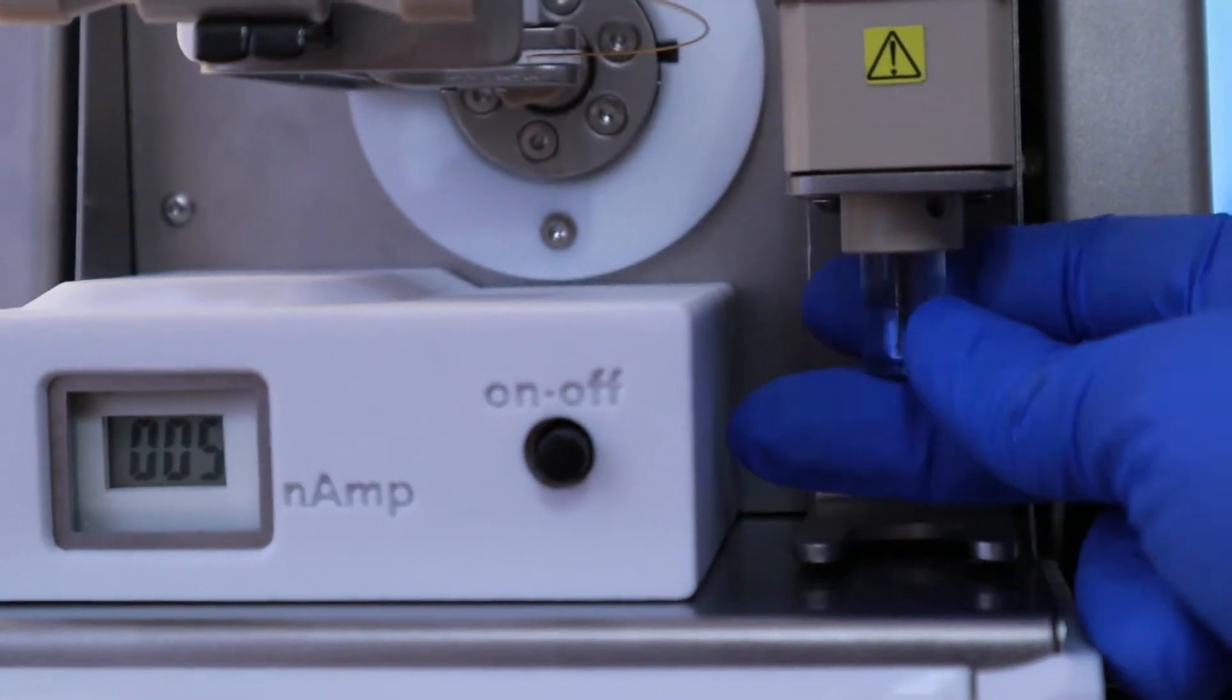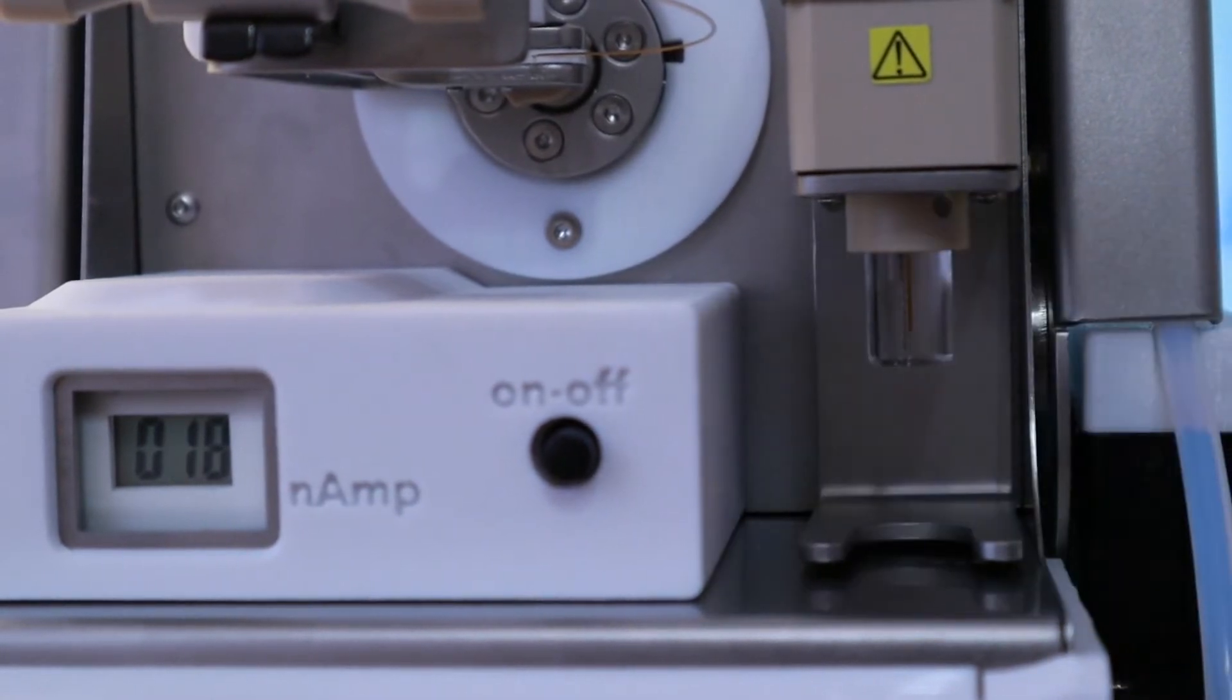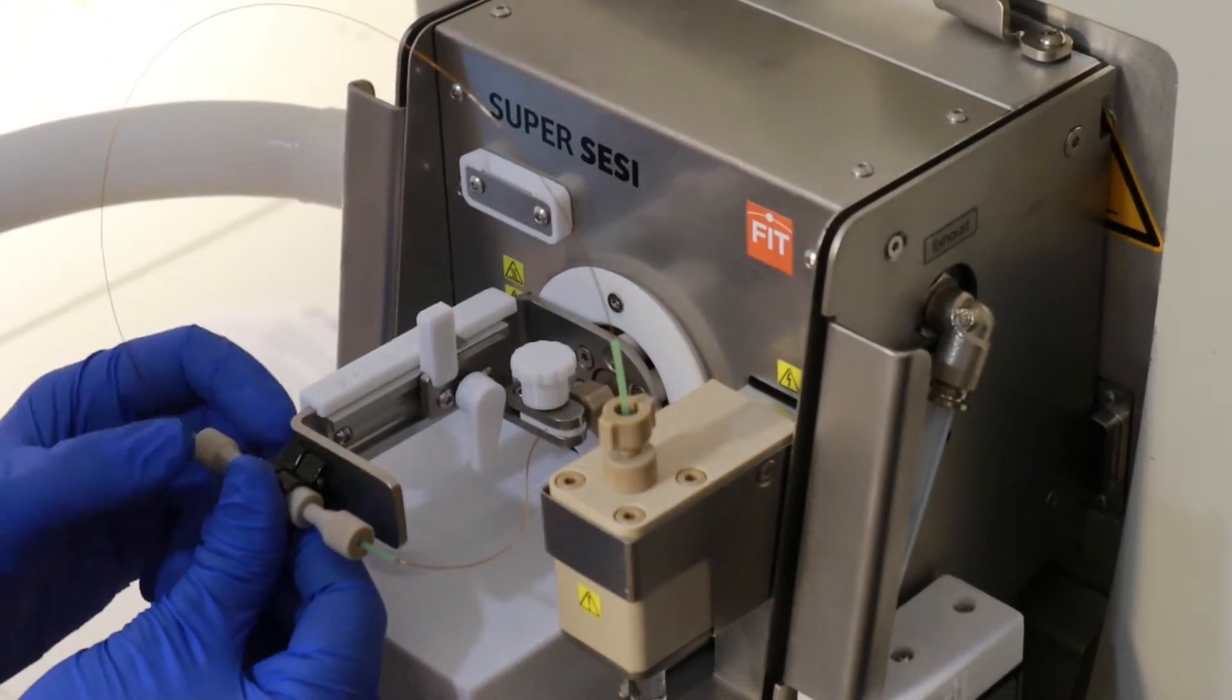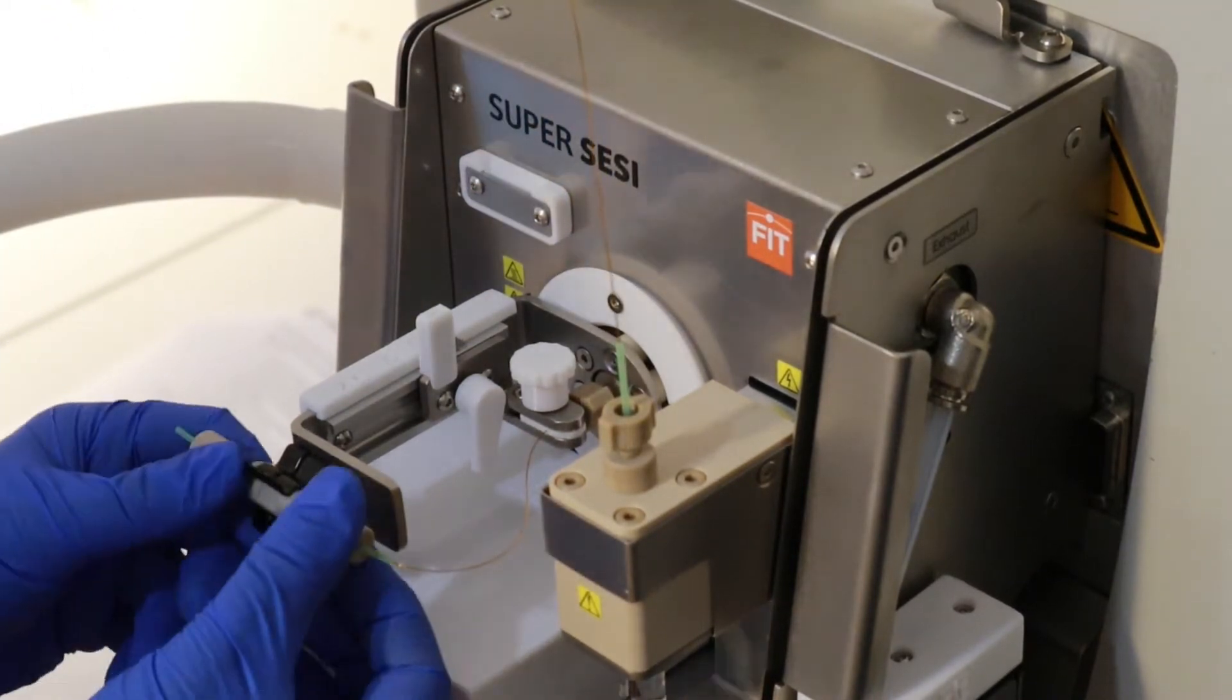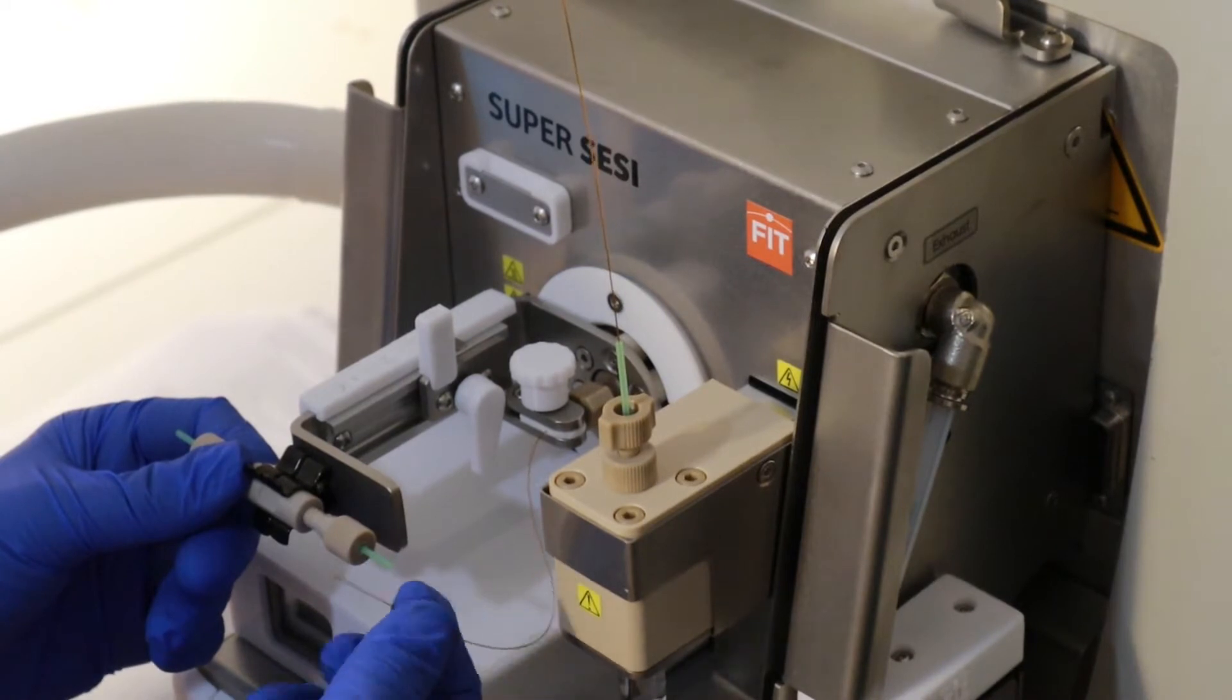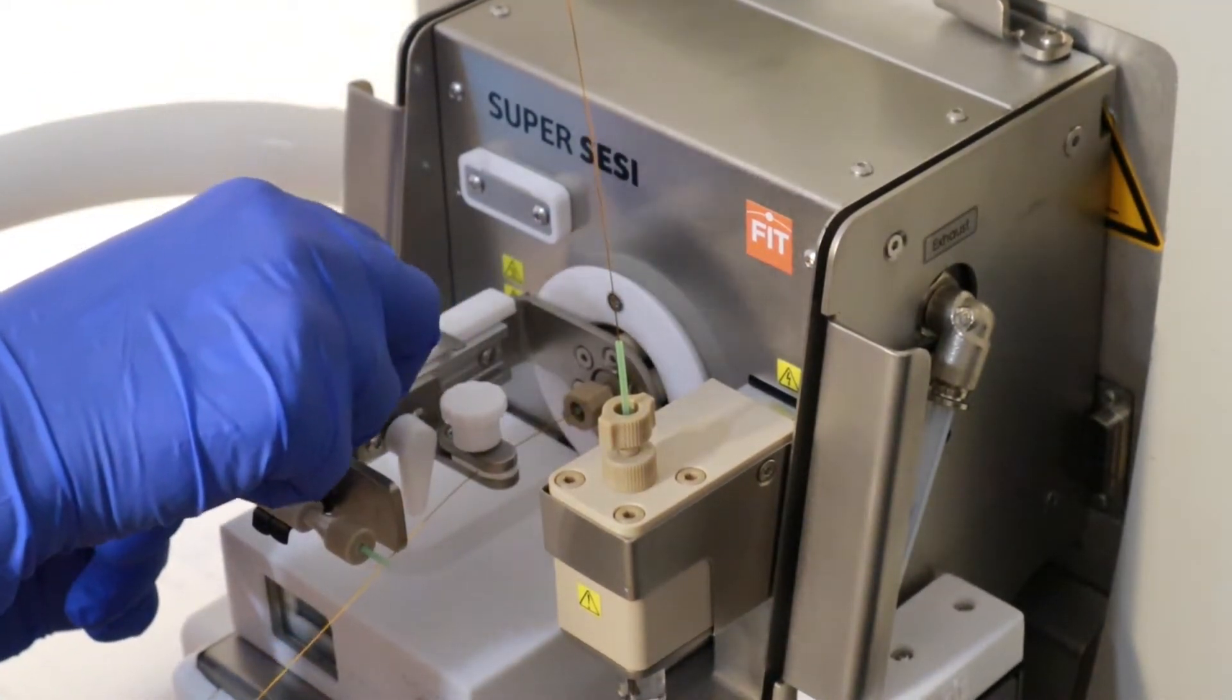The first thing to do is remove the old emitter. Disconnect it from the fitting and the emitter clamp. Make sure the fittings are all loose before removing the emitter.